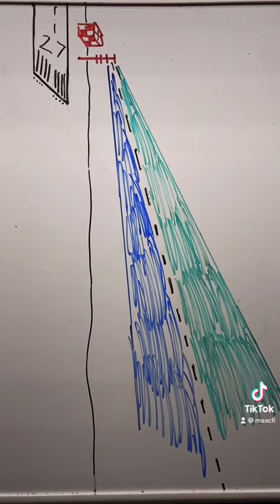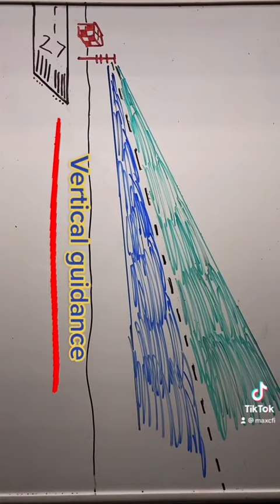The glide slope signal provides vertical course guidance to the pilot, letting them know if the airplane is above the glide slope, below the glide slope, or right on it.